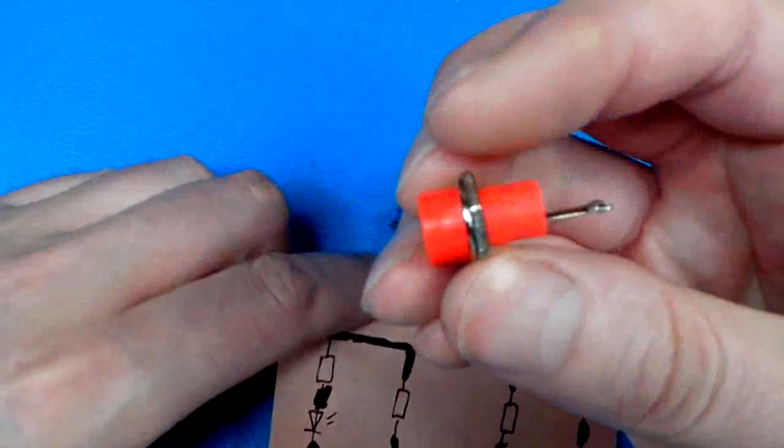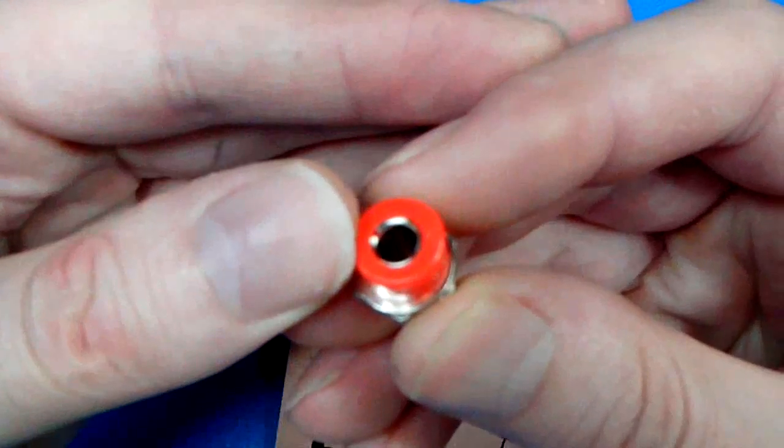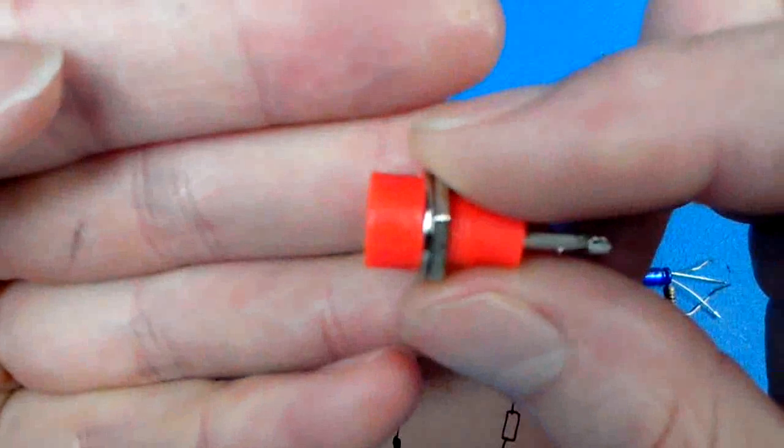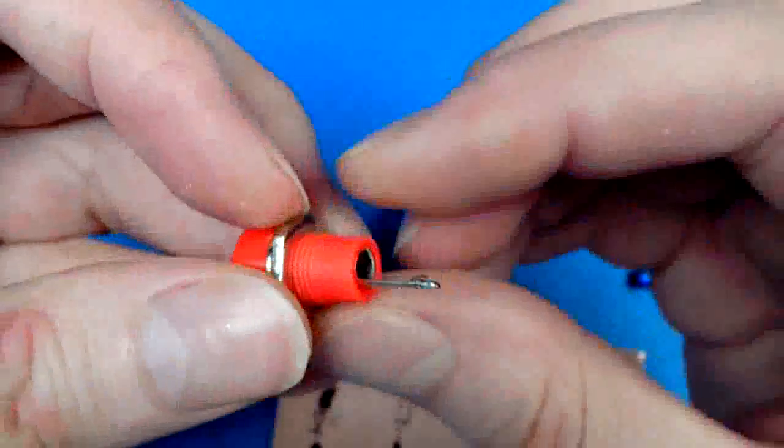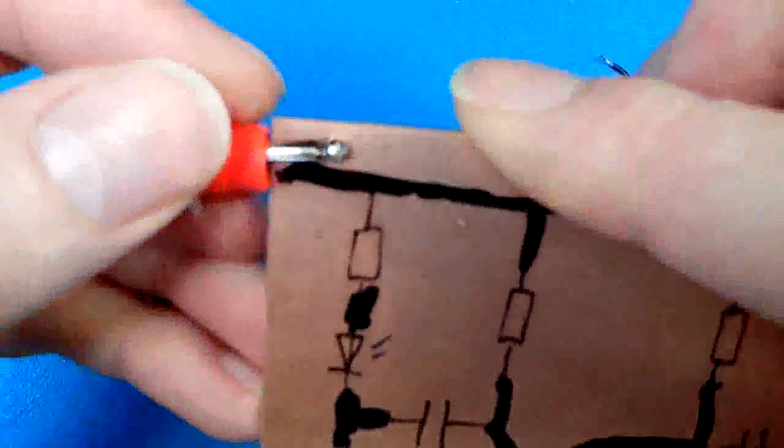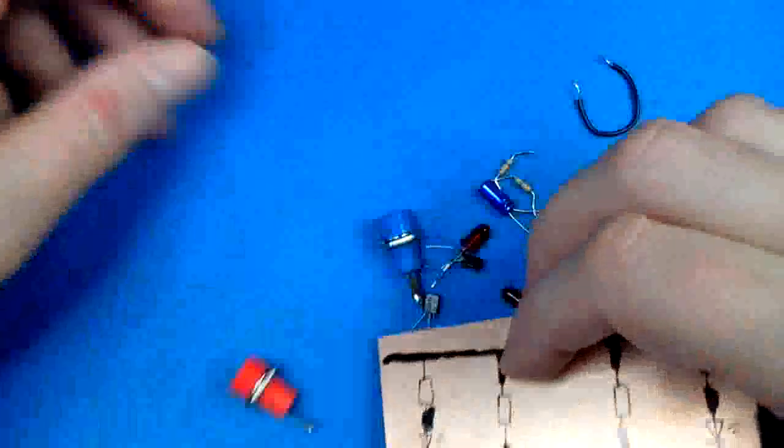This is an example of a component - a four millimeter banana terminal. That doesn't fit on a breadboard. So if you want to make this schematic on a breadboard, you have a problem fitting these in. But there's no problem using this method.